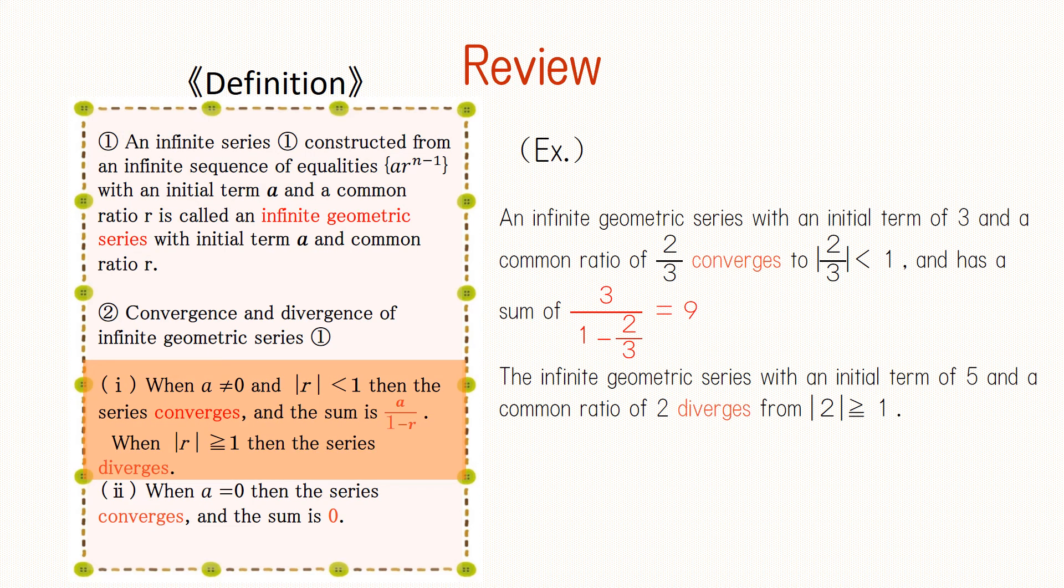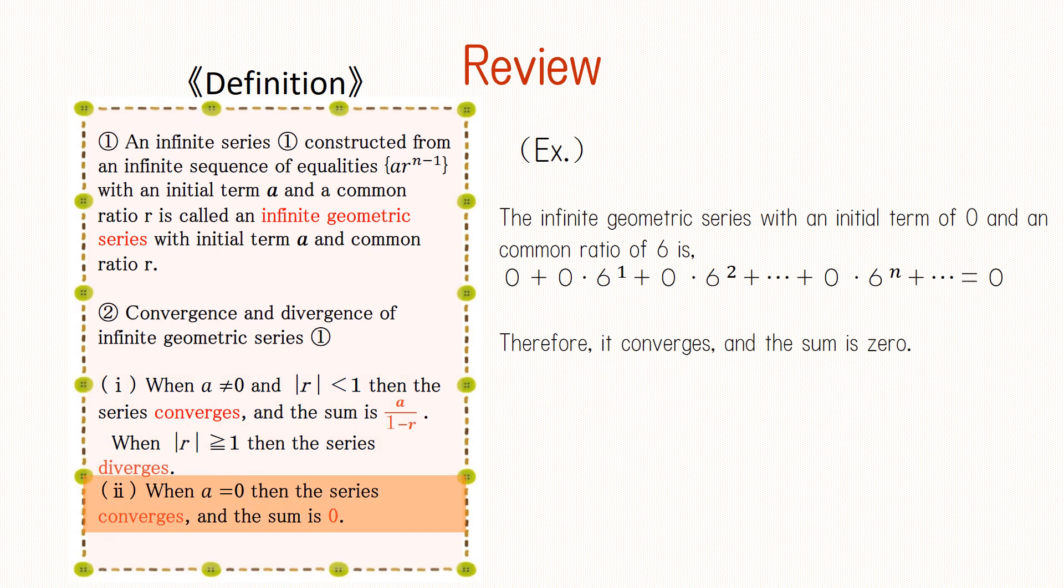If the first term a is not equal to 0 and the absolute value of r is less than 1, then the series converges and the sum is a/(1-r). When the absolute value of r is greater than or equal to 1, then the series diverges. When a equals 0, then the series converges and the sum is 0.